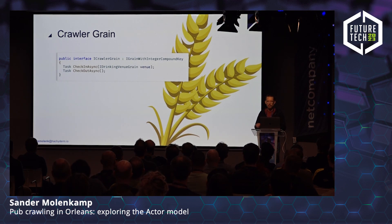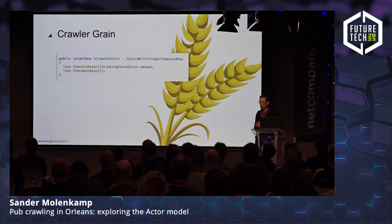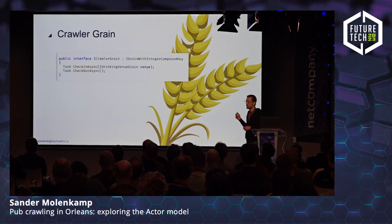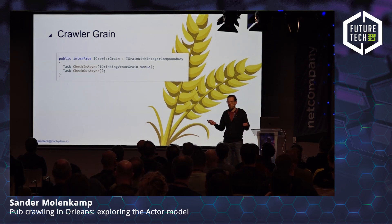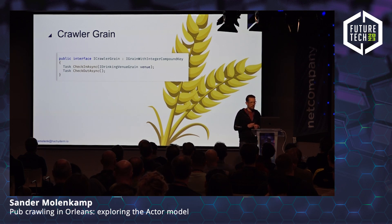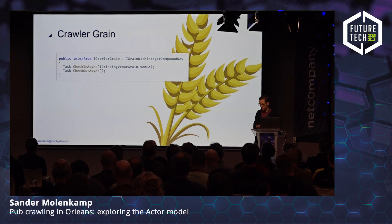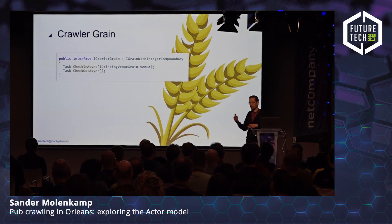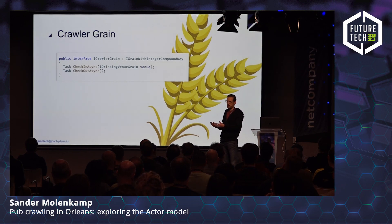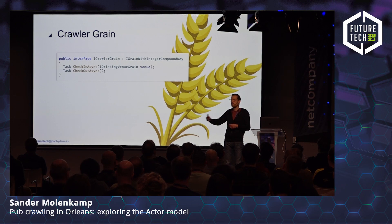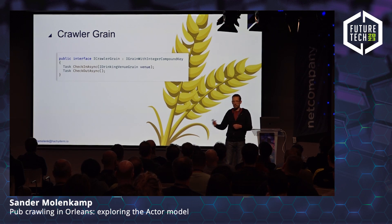Further in this interface you specify the operations you can execute on this grain. I have two operations: check in to a venue (passing in the venue reference), and check out. Notice that they both return Tasks, because all methods in the interface must be asynchronous as they will probably incur a network hop. The IDrinkingVenue grain parameter is a reference to a different grain — but it's just a logical reference. The actual grain may not even be activated at this moment. Because it's just a reference, you can pass it around through the cluster, store it in state, come back later, reload it, and still use that same reference to call the actual grain.